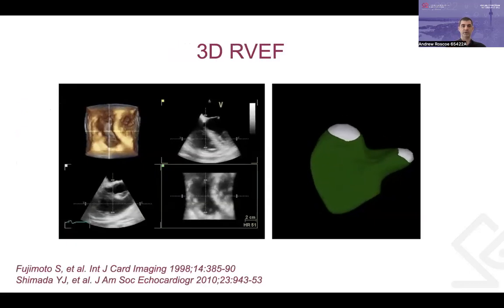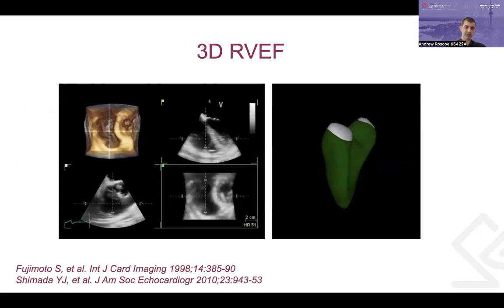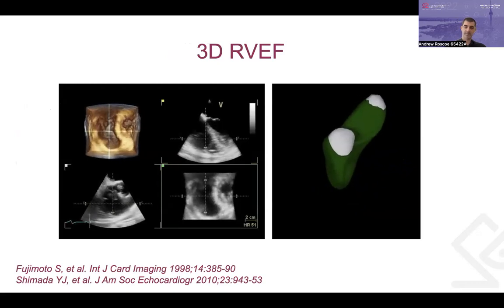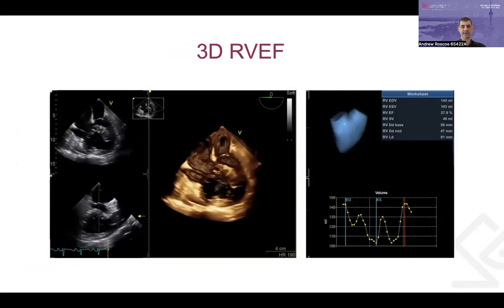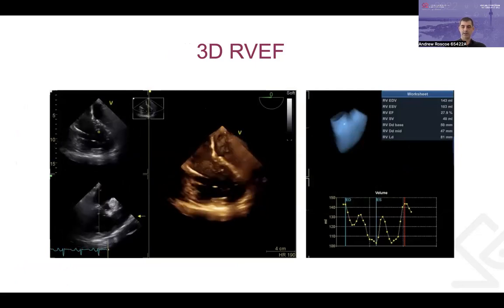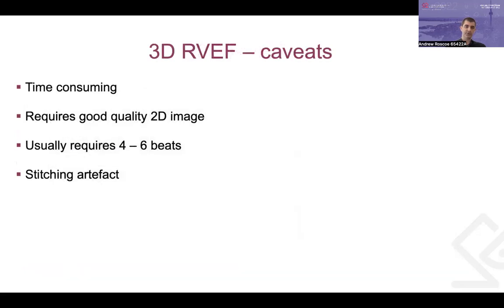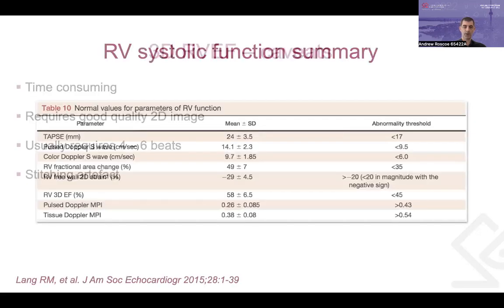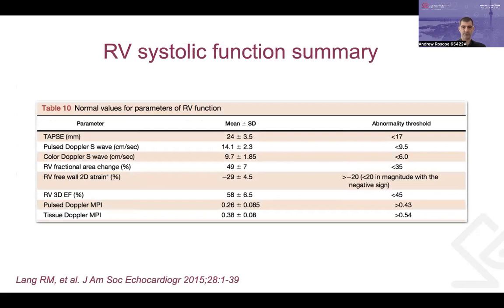Finally, 3D RV ejection fraction reconstructed from 2D images is often quite time-consuming, though technology is improving. The software is frequently not on the machine itself and requires offline reconstruction, often requiring stitching of beats together. Some machines now have on-board software capable of single-beat acquisition. To summarize, this slide provides the normal values for all the systolic RV function parameters discussed, so we know what we're aiming for.